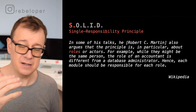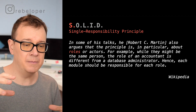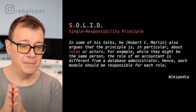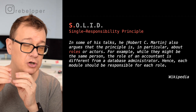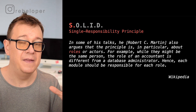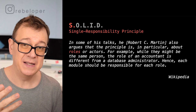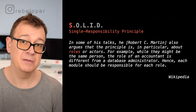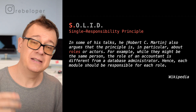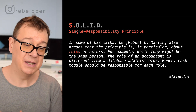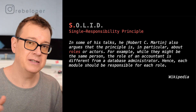Single Responsibility Principle states there should never be more than one reason for a class to change. Robert C. Martin argues the principle is about roles or actors — the role of an accountant is different from a database administrator, so each module should be responsible for each role. Think of it this way: if a class has many responsibilities, that breaks the Single Responsibility Principle. You want one role and one role only for your entities — classes, structs, all of that.